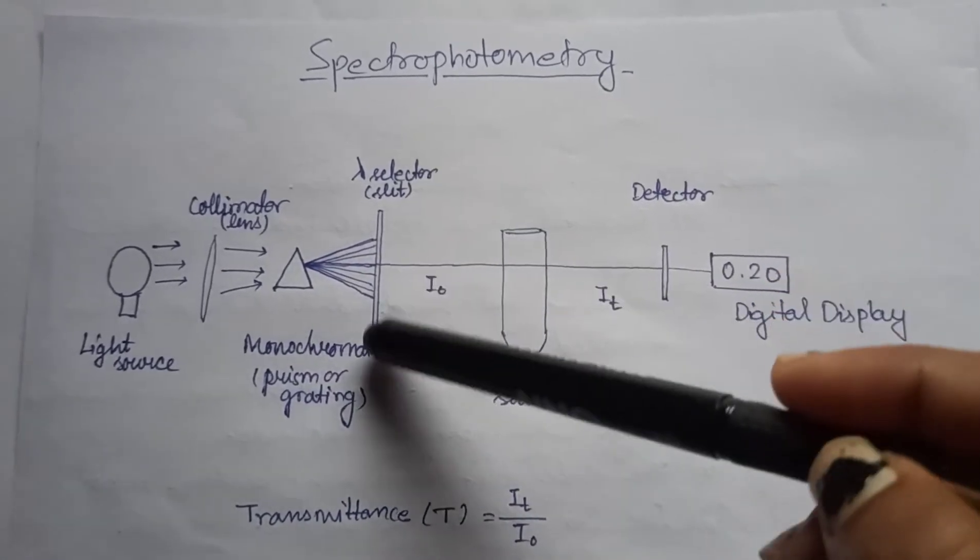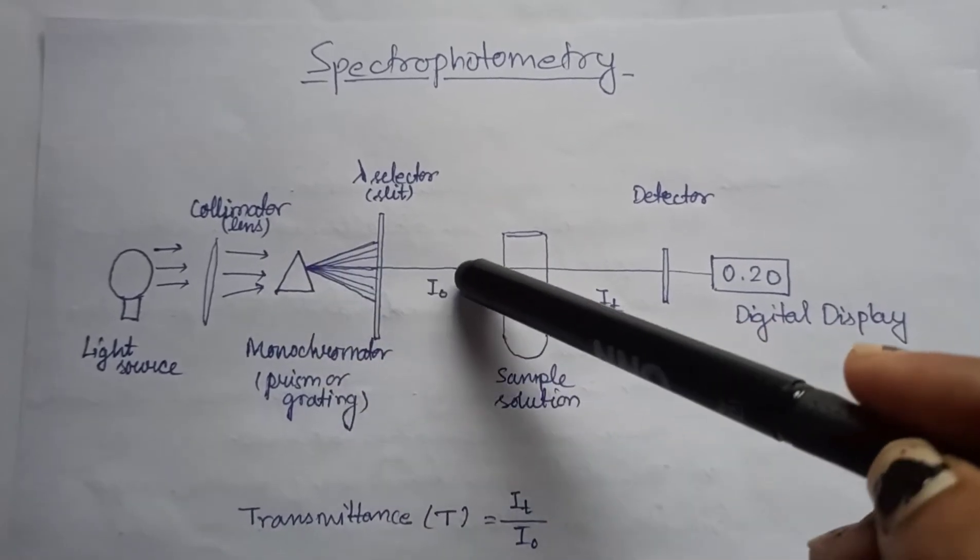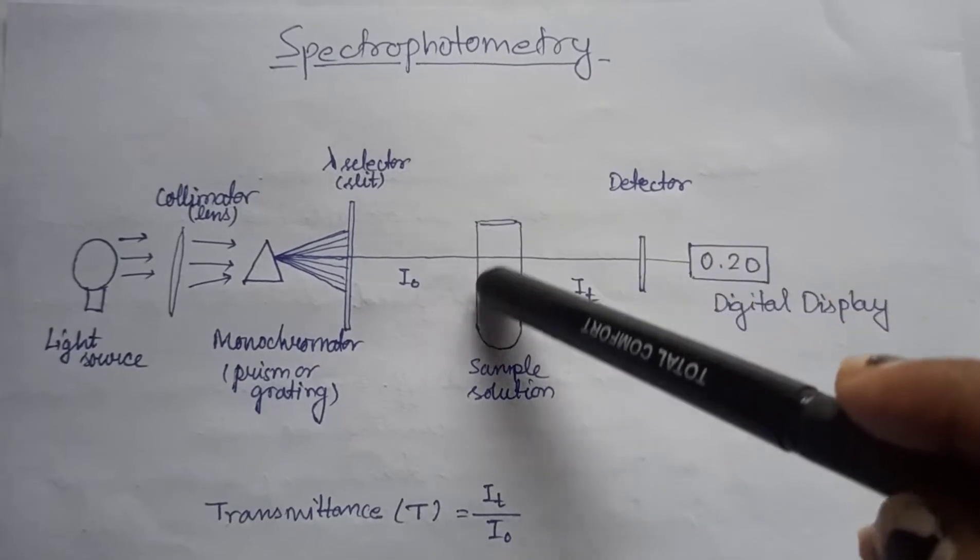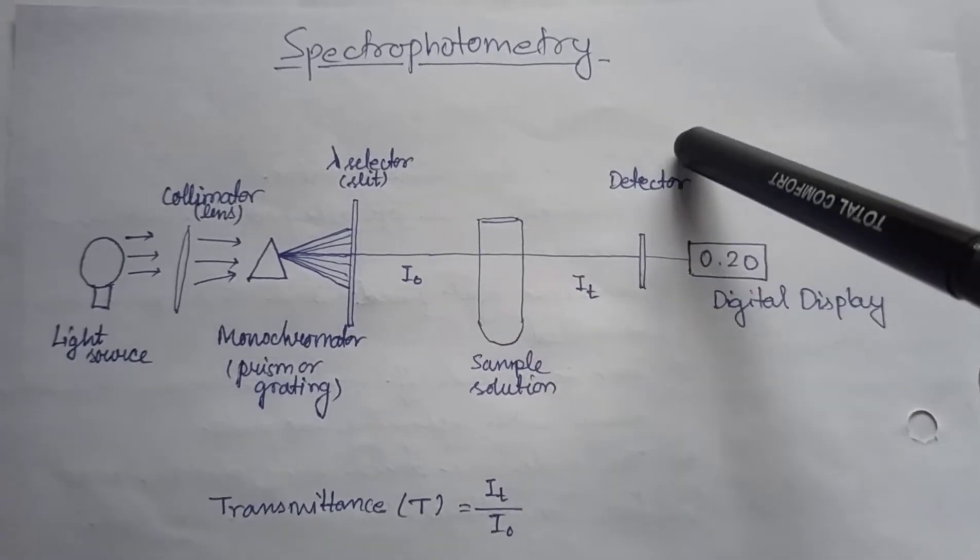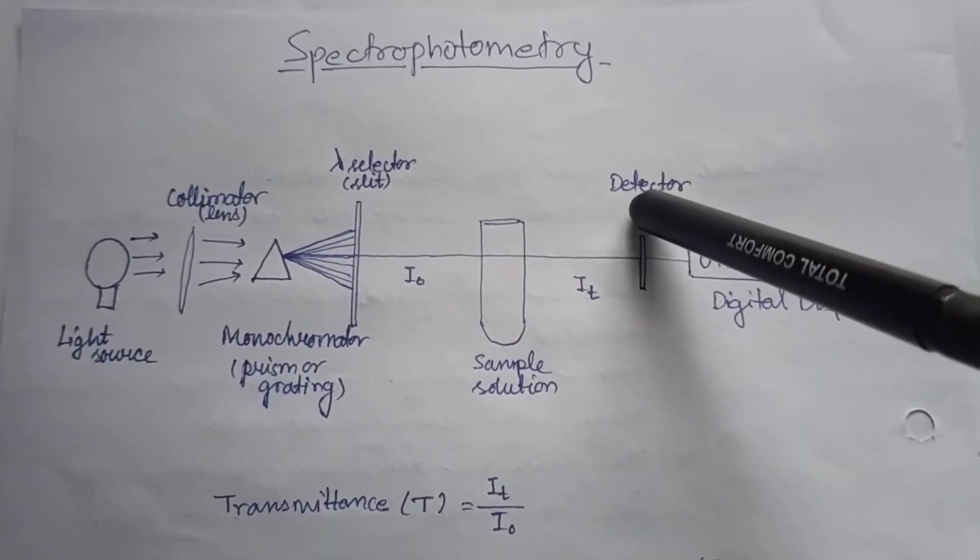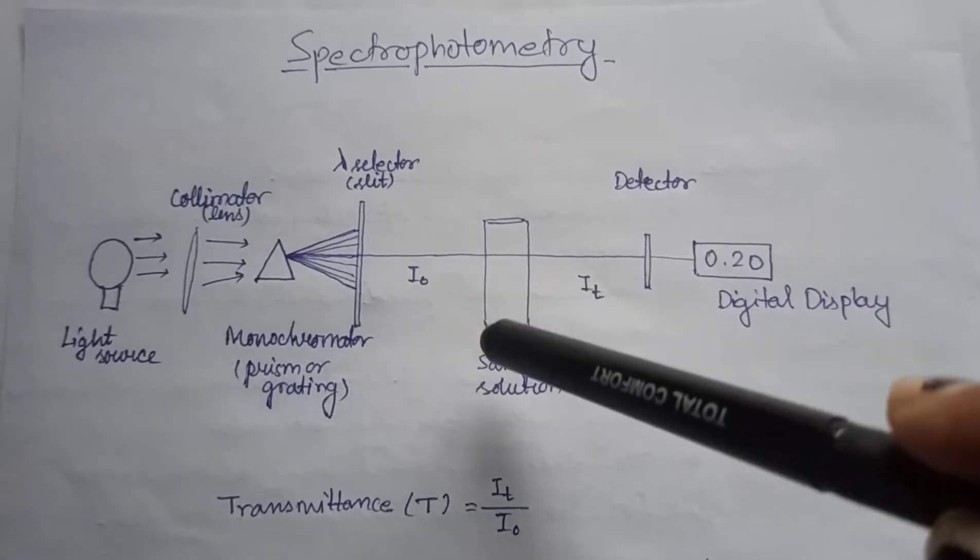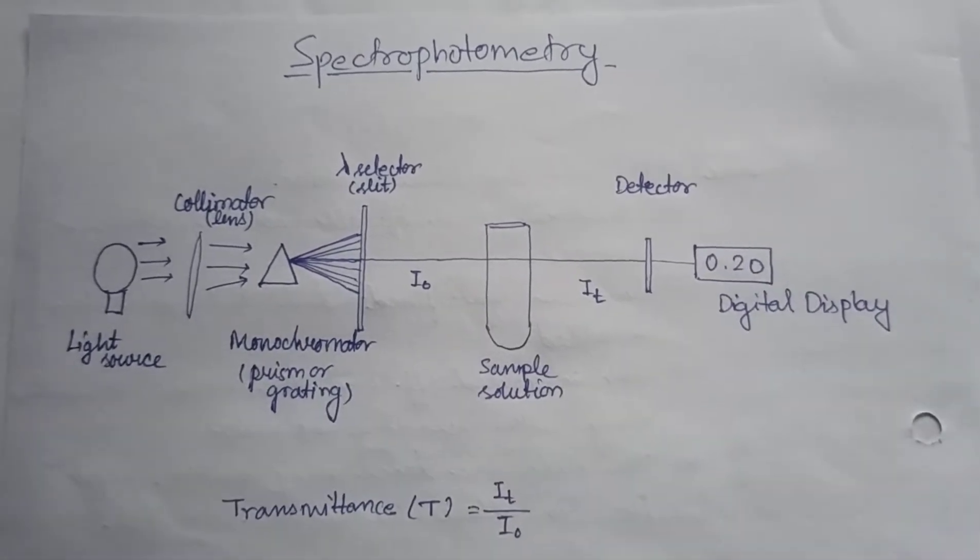Then there is a wavelength selector that only transmits the desired wavelength, and the desired wavelength is absorbed by the sample solution. There is a photometer that detects the amount of photons absorbed by the sample solution and displays it in a digital display.